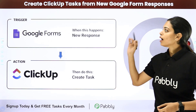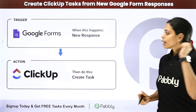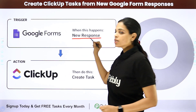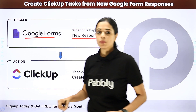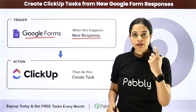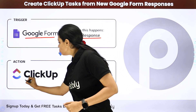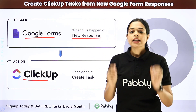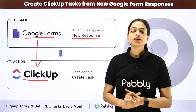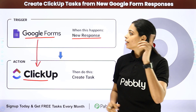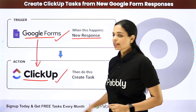In this video we are going to see how to create ClickUp tasks from new Google Form responses. Every time a new response is received through a form builder application — here we have taken the example of Google Forms — with the information received, you want to create a task in ClickUp, which is a task management software. For this you will have to integrate the two applications, and the same thing can be done using Pabbly Connect software. Your trigger application is Google Forms and your action application is ClickUp.